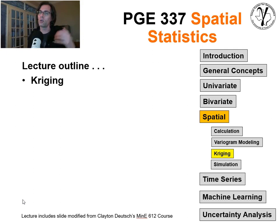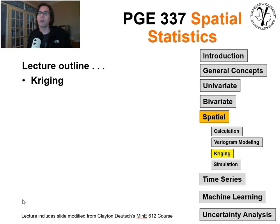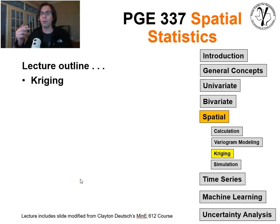The trend is considered known; the residual is considered unknown, and we will use geostatistical methods to figure that out. So we have removed the trend, we're working with the residual, and we're ready to do some Kriging — Kriging for the purpose of making estimates in space.